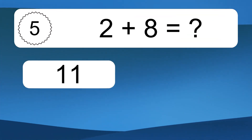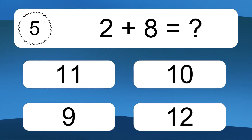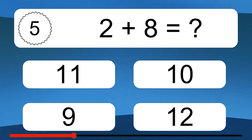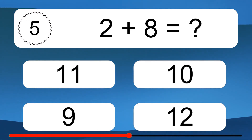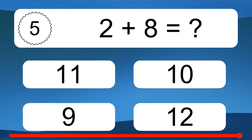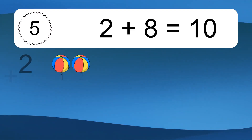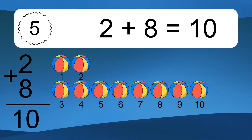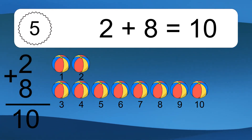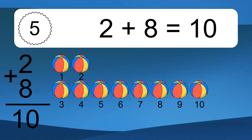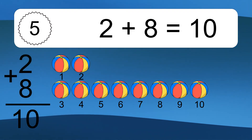2 plus 8 equals what? 2 plus 8 equals 10. Let's count it: 1, 2, 3, 4, 5, 6, 7, 8, 9, 10.